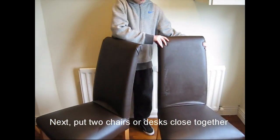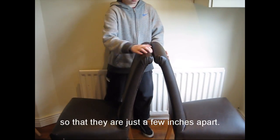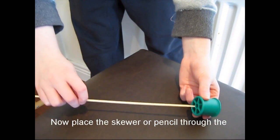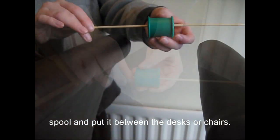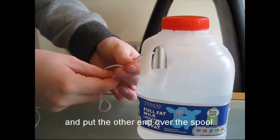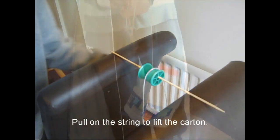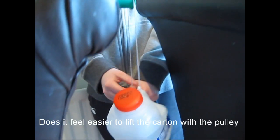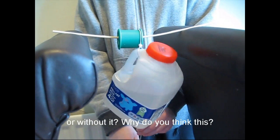Next, put two chairs or desks close together so that they are just a few inches apart. Now place the skewer or pencil through the spool and put it between the desks or chairs. Tie the string to the milk carton and put the other end over the spool. You've made a simple pulley. Pull on the string to lift the carton. Does it feel easier to lift the carton with the pulley or without it?